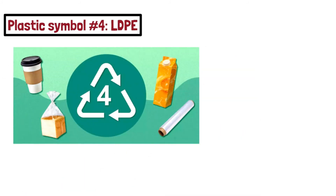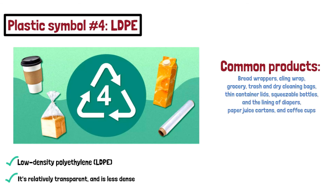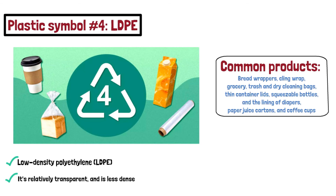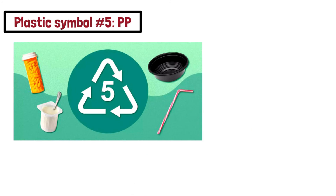The recycling symbol with number 4 indicates LDPE — low density polyethylene. It is relatively transparent, less dense, and more resistant than other types of plastic. Common products of LDPE include bread wrappers, cling wrap, grocery bags, dry cleaning bags, thin container lids, squeezable bottles, diaper lining, paper juice cartons, and coffee cups.